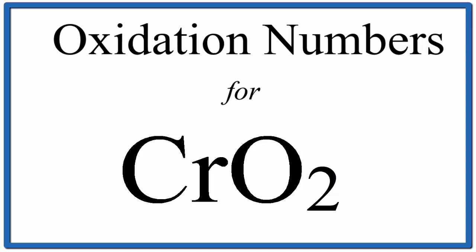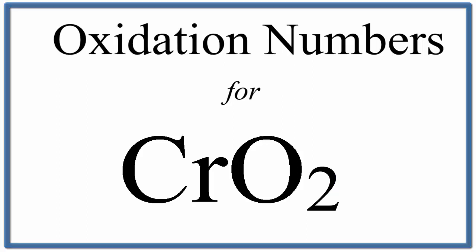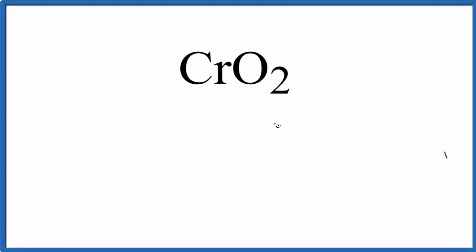To find the oxidation number of Cr in CrO2, that's chromium four oxide, we know that all of these numbers, all the oxidation numbers, are going to add up to zero. This is a neutral compound.